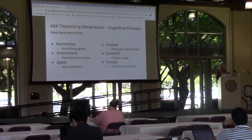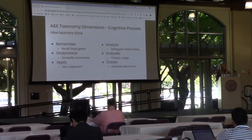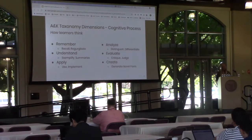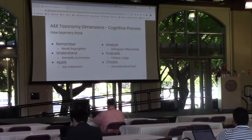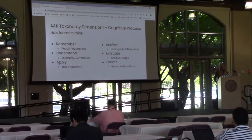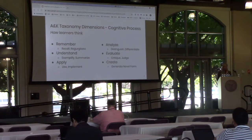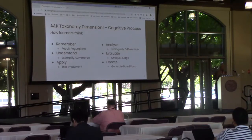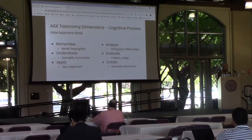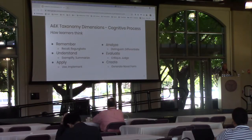Apply is when a learner carries out or uses the information in a given situation. Analyze involves learners breaking material into constituent parts and determining how the parts relate to one another and to an overall structure or purpose — this involves distinguishing and differentiating information. Next is evaluate, where learners make judgments based on criteria and standards, which can involve critiquing or judging information given well-reasoned logical arguments. Finally, create is where learners put elements together to form a coherent or functional whole, or reorganize elements into a new pattern, involving some novel representation of the information.